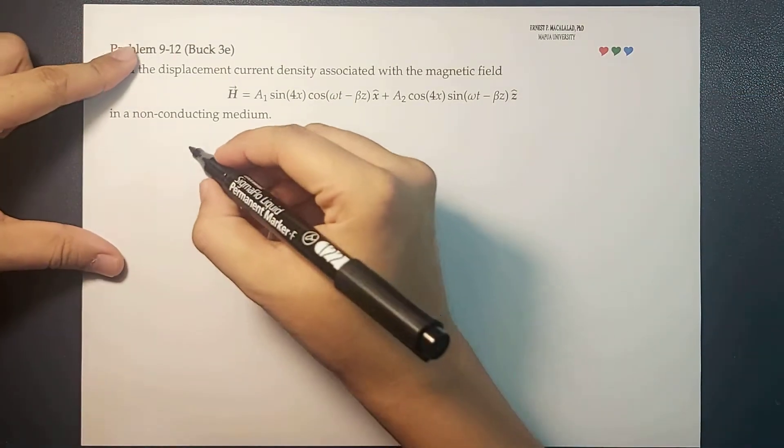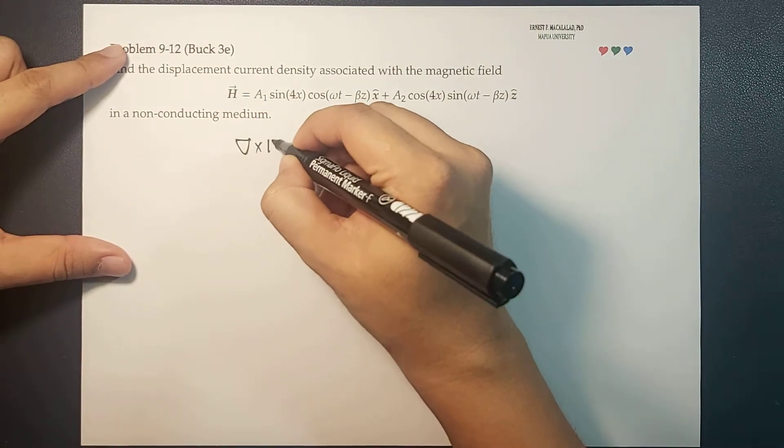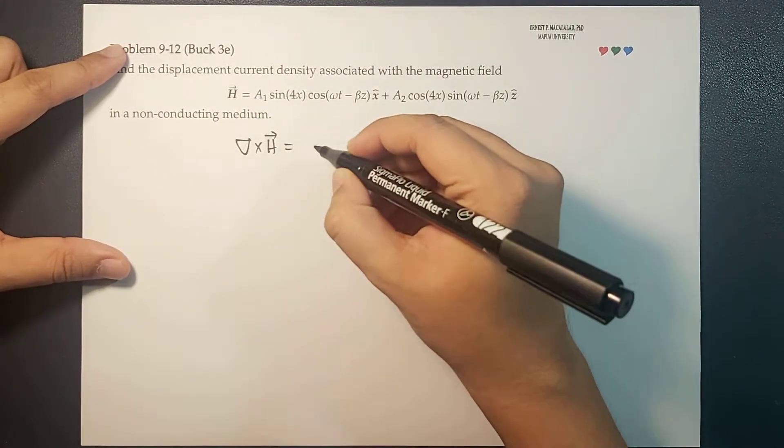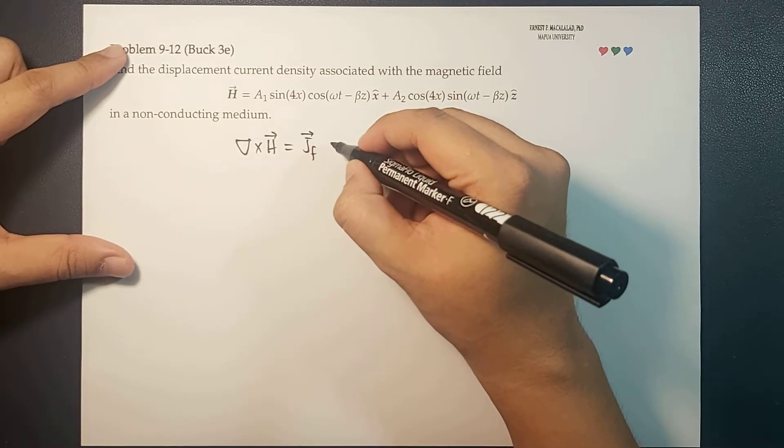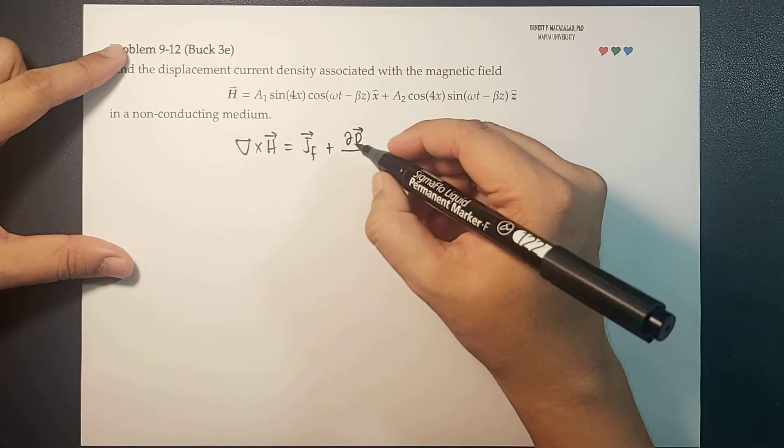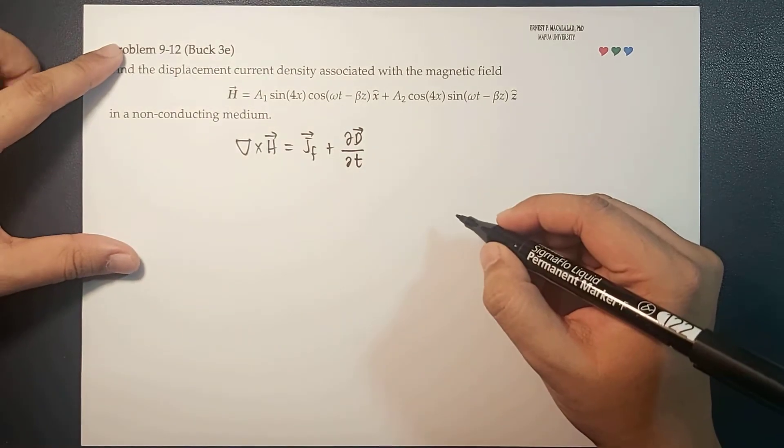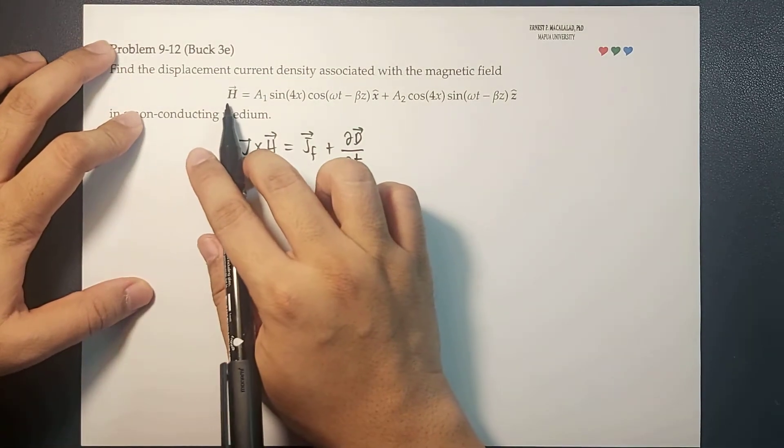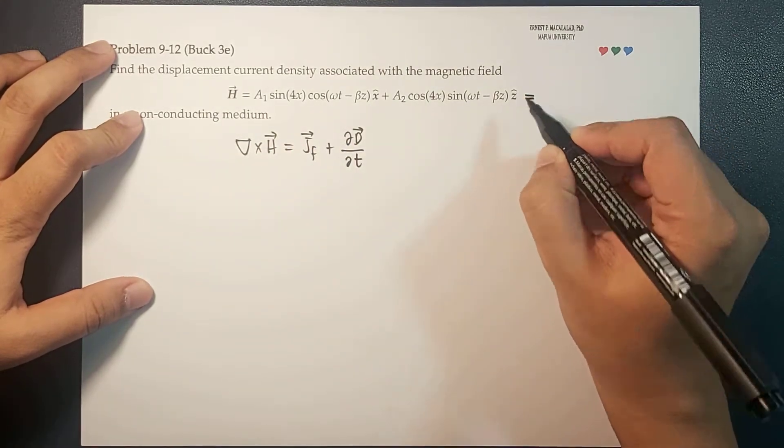the curl of H is equal to the free current J_F plus the derivative of the electric displacement D with respect to time. So from the equation of the magnetic field H, you can see